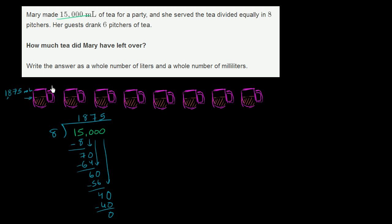So the guests drank one, two, three, four, five, six, leaving two pitchers left. How much total tea is going to be in that? Well, it's going to be two times 1,875, or 1,875 milliliters times two. Let's figure out what that is.